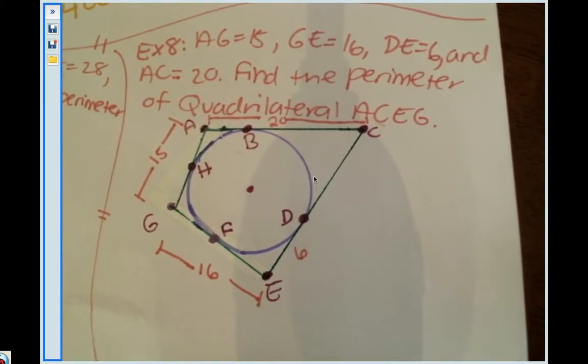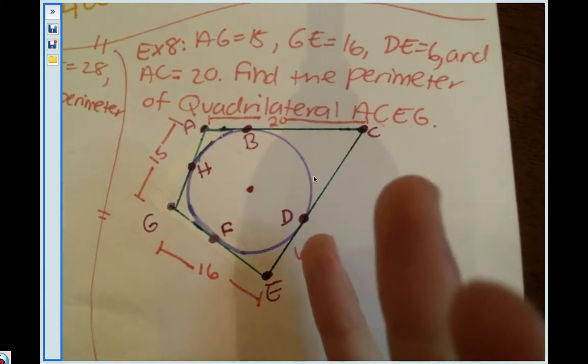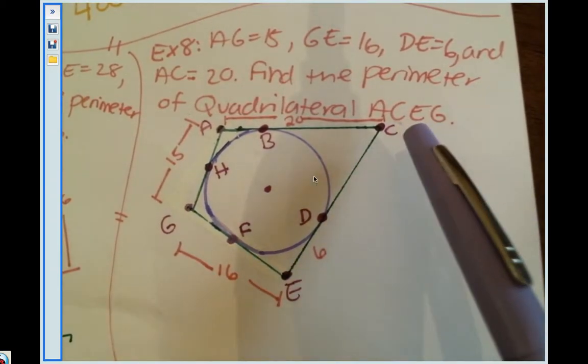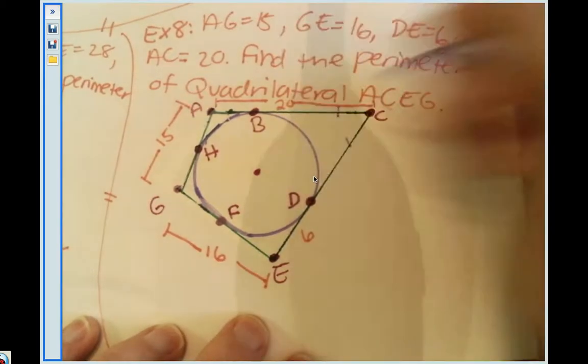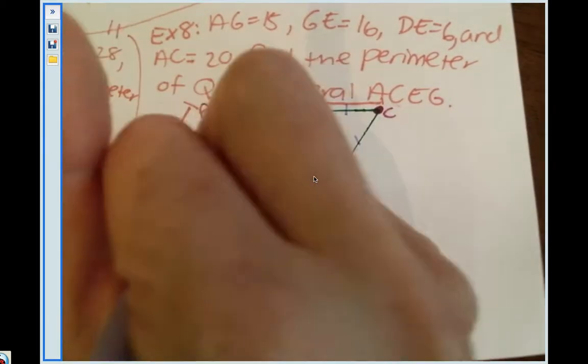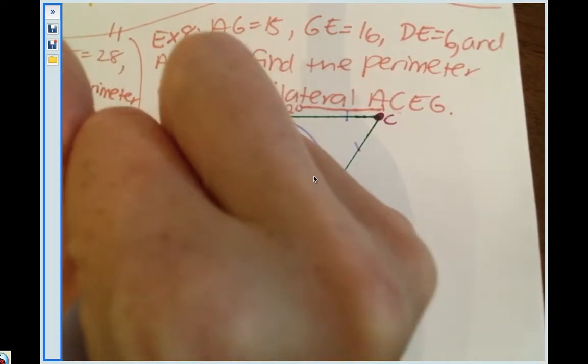I'm going to label all the congruent pieces because there's a bunch of them. Anywhere that you spot two tangent segments that come from the same external point, they're congruent. So that means these two are congruent, these two are congruent, these two are congruent, and these two are congruent.